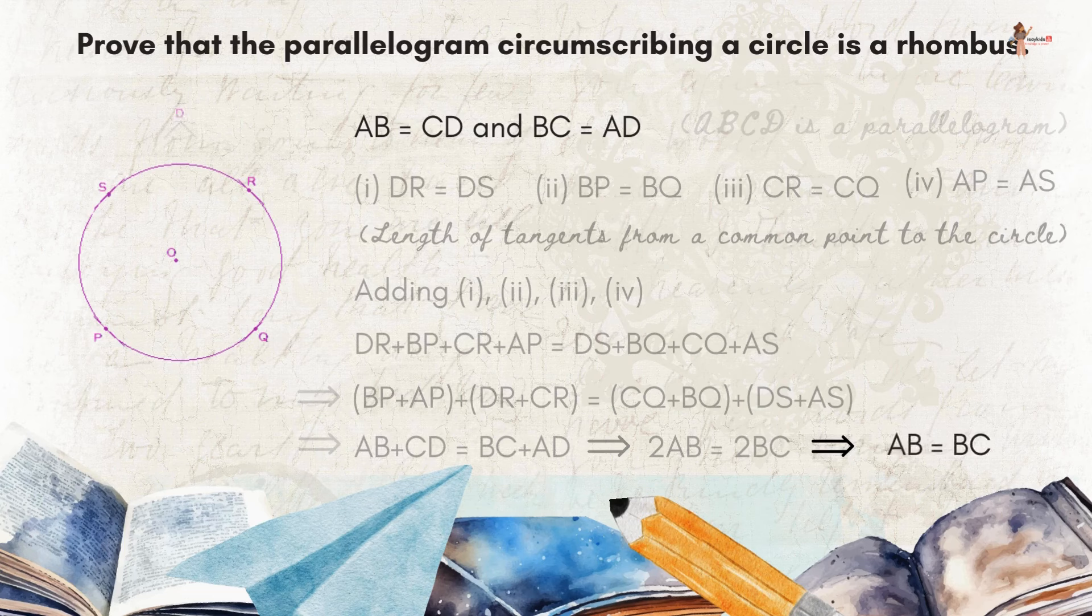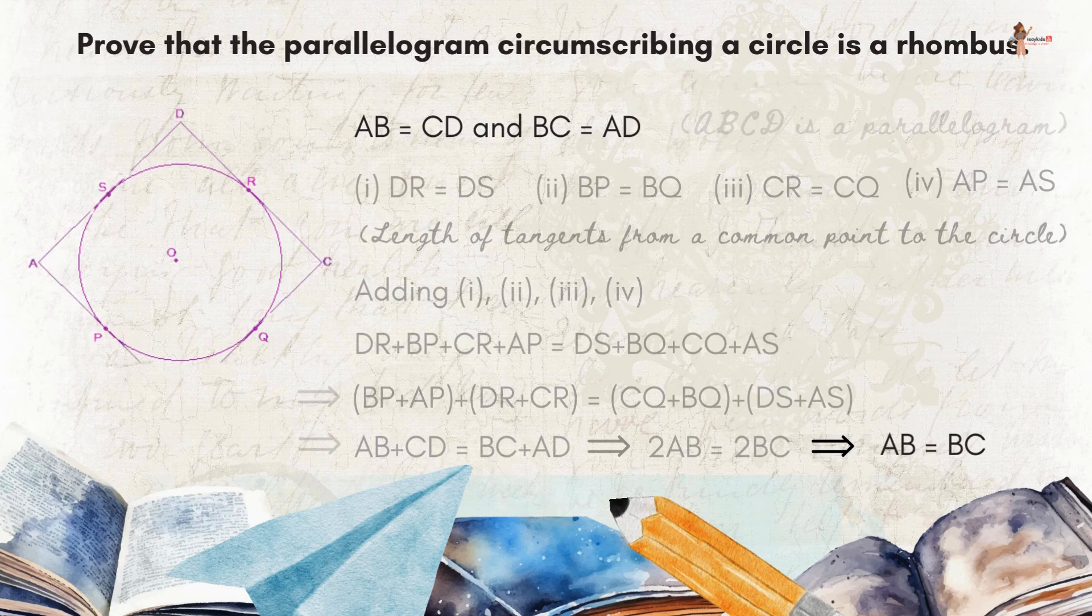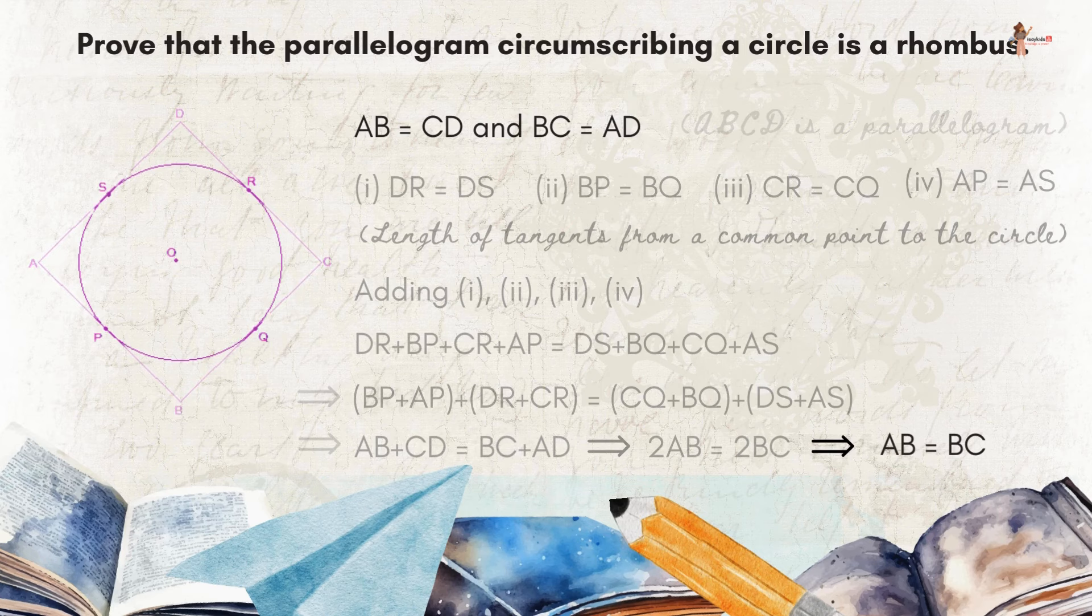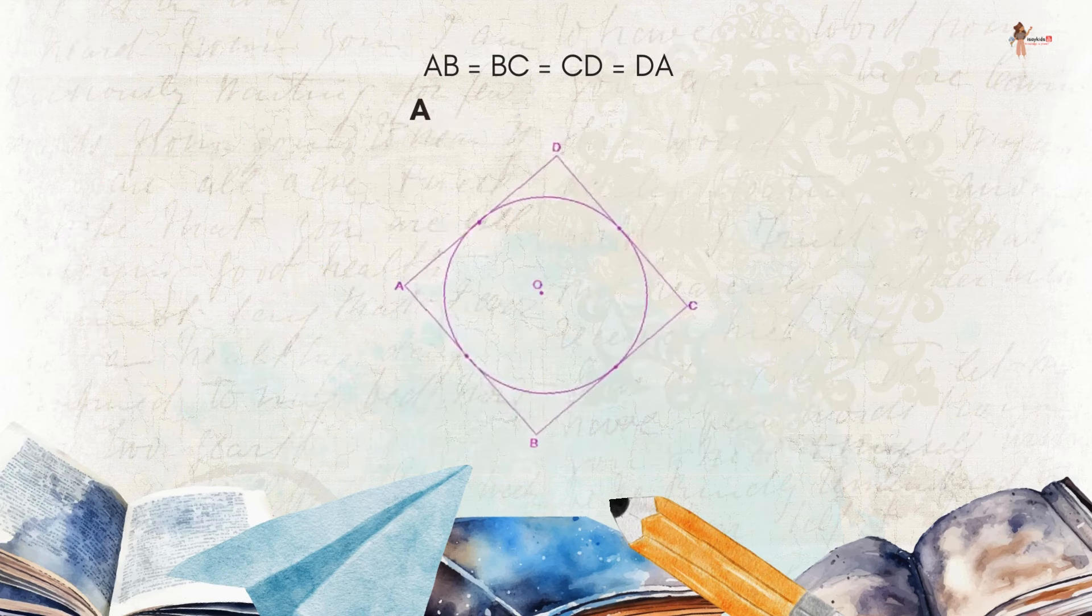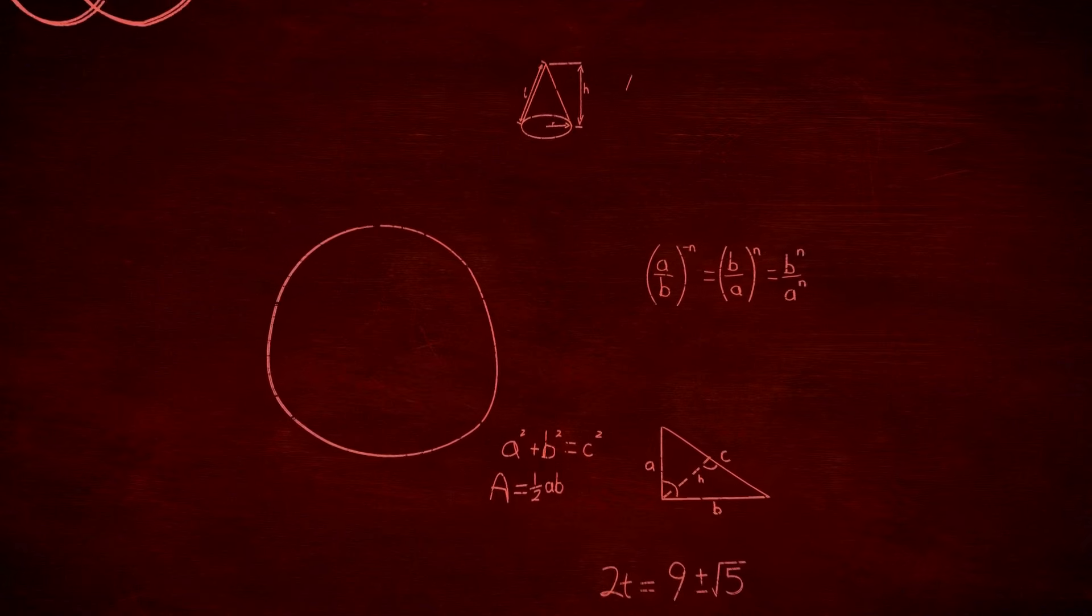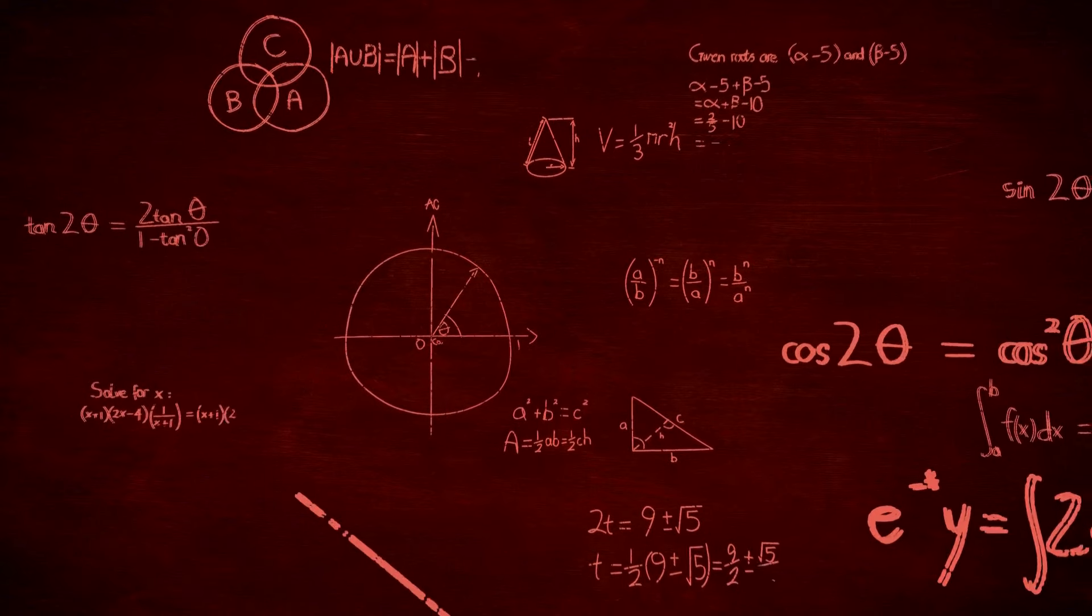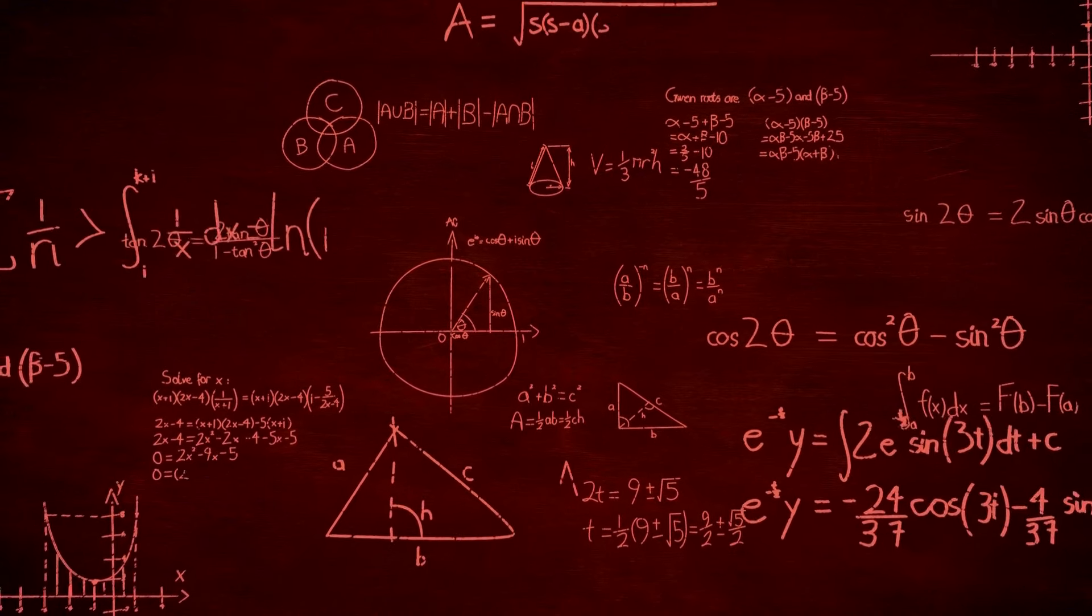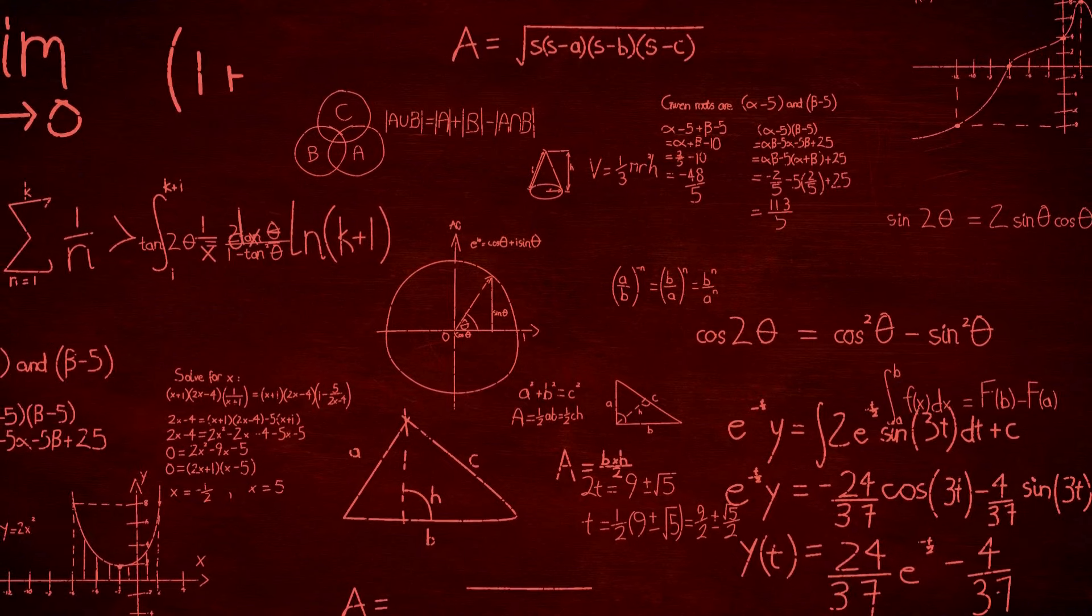Now since AB is equal to BC, AB is also equal to CD, and BC is also equal to AD, we can say that AB is equal to BC which is equal to CD and also equal to DA. So all four sides are equal, therefore ABCD is a rhombus.